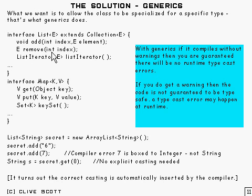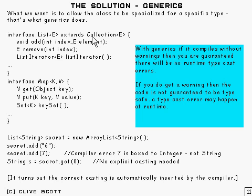Here when we remove some element at a particular index, the value returned would be the element that's been removed, and so that would be of type E — that's why we use E there. Similarly, the list extends collection, and of course it's going to be a collection of the same type, so we use E again there.